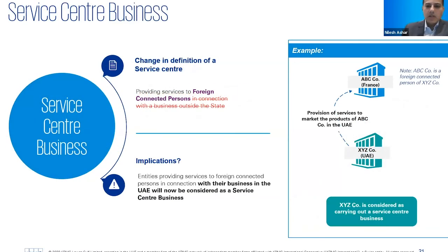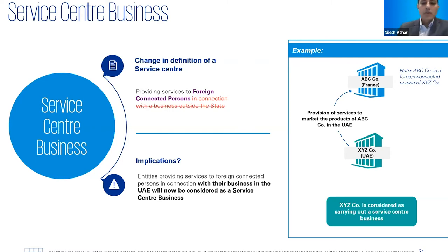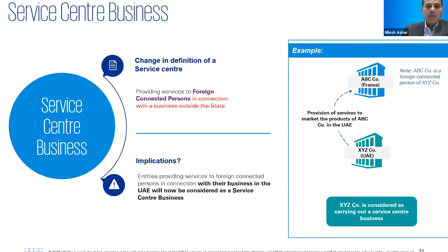On service center business: the key change is that the provision of services 'in connection with the business outside the UAE' — that reference has been withdrawn. So as long as a UAE company provides services to a foreign connected person, regardless of whether those services were in relation to the foreign connected person's UAE business or outside UAE business, it is now in scope. In this example, services provided by a UAE company to ABC Co in France to market ABC Co's products in the UAE — previously outside scope because related to UAE business — are now in scope.